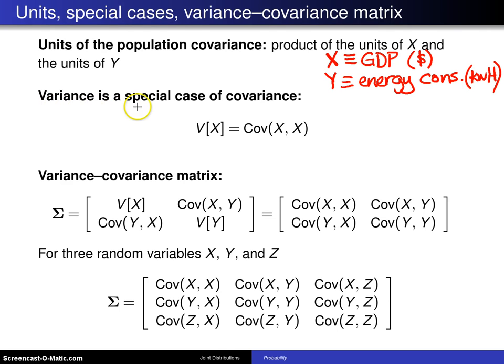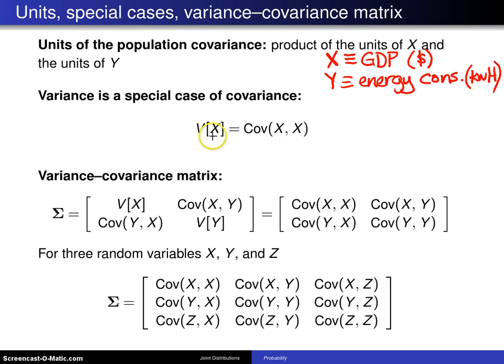As indicated earlier, the variance is a special case of the covariance. That is to say, when you put in the covariance of X and X, that is the variance of X, and that leads to something known as a variance-covariance matrix.